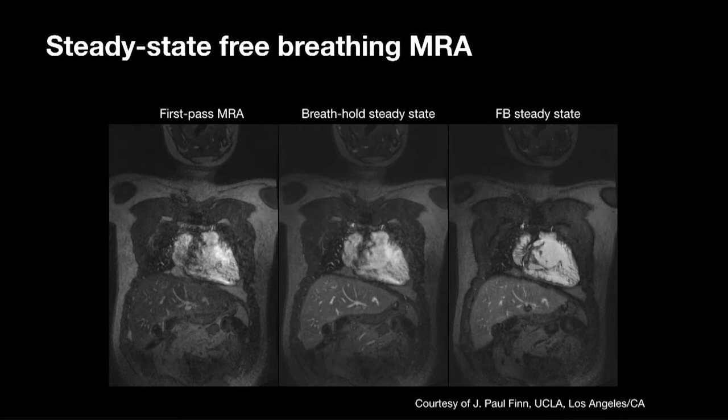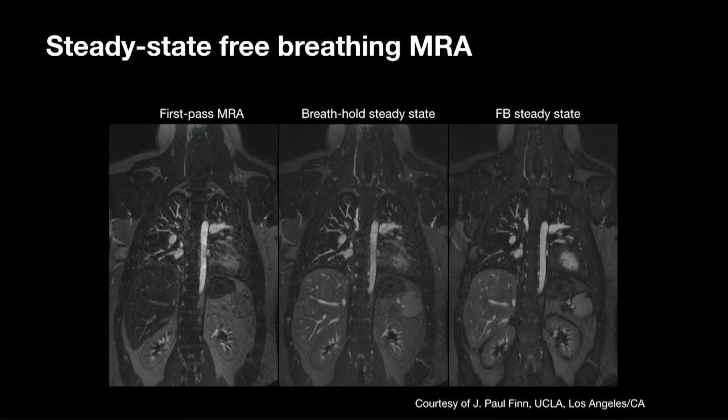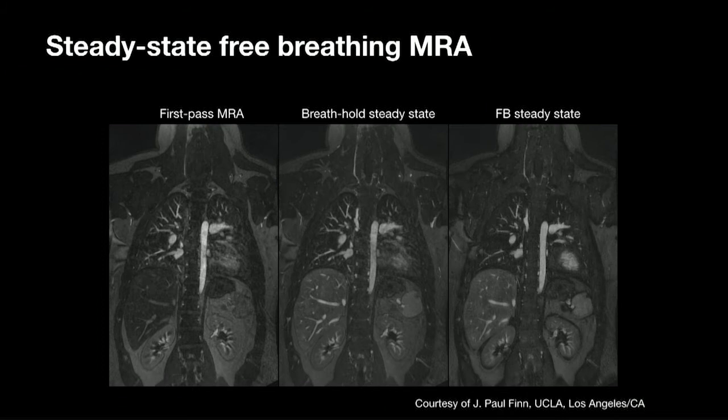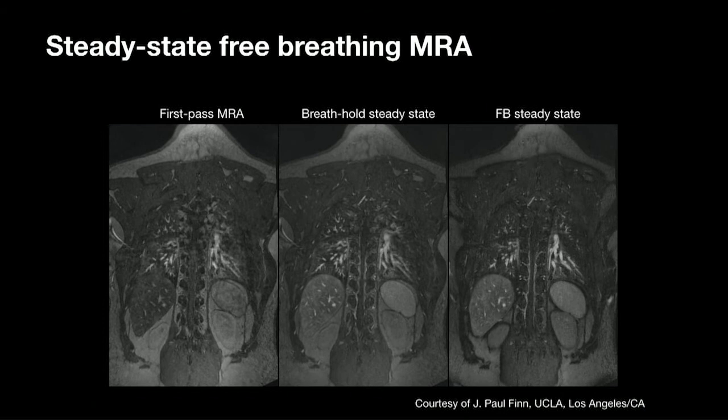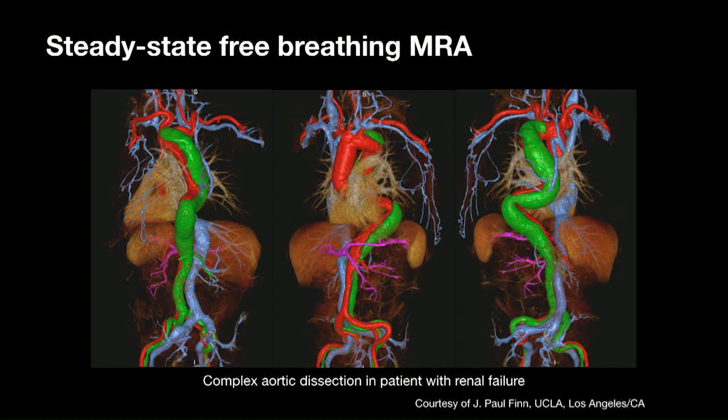A slide from Paul Finn shows ferumoxytol: first-pass MRA, then steady state with arteries and veins, and an even longer acquisition with respiratory motion correction and cardiac motion compensation giving a beautiful whole-body angiogram. With modern post-processing software you can segment out the structures you want. This is a patient with a complex dissection and advanced renal failure, beautifully showing the whole thing from top to bottom including the veins, which are really useful since they're difficult to image with other modalities.